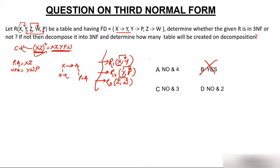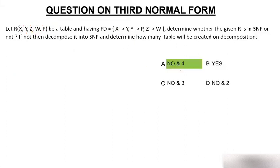The last table R4 is for the key of the original table. The key is XZ, so R4 contains attributes X and Z. Now all four tables are in 3NF. The decomposition results in four tables, so the correct answer is: No, the table is not in 3NF, and it decomposes into four tables.